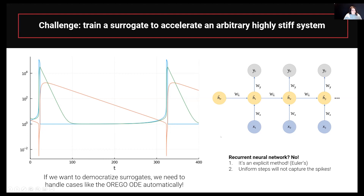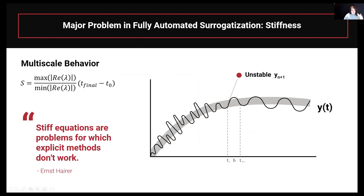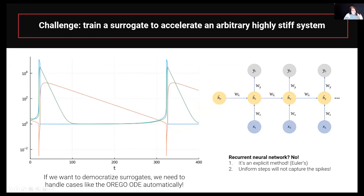Let's look at a recurrent neural network: one way to think about it is as the Euler discretization of a neural ODE. Since stiff equations are where explicit methods don't work, and Euler's method is explicit, you'll almost certainly get blow-ups. Furthermore, these methods are uniform in time, but the information about stiff problems is not uniform — you need very small time steps where the dynamics spike but large time steps where the trajectory is nearly a straight line. So recurrent neural networks and LSTMs are simply not an architecture that works on real engineering problems: they're based on explicit predictions, and they don't account for the continuous nature of the problem or adjust continuously in time.